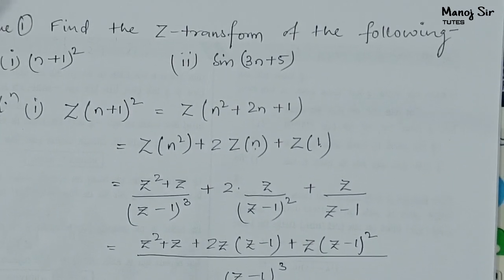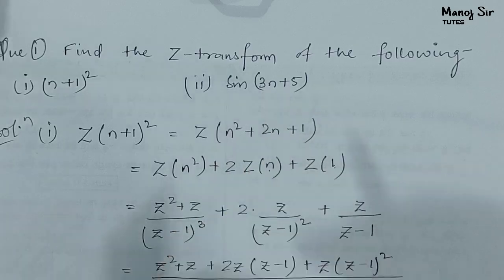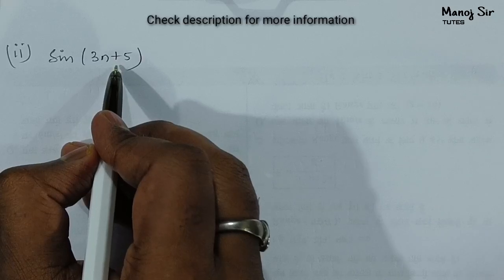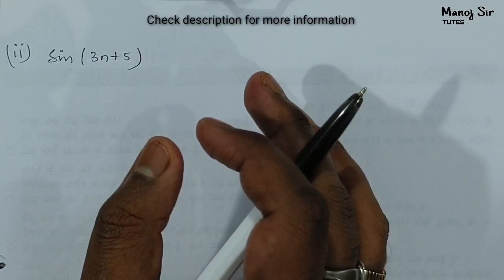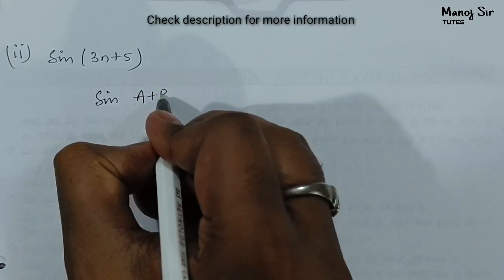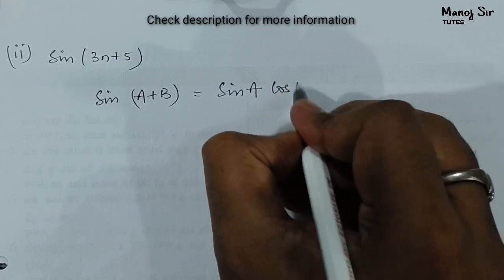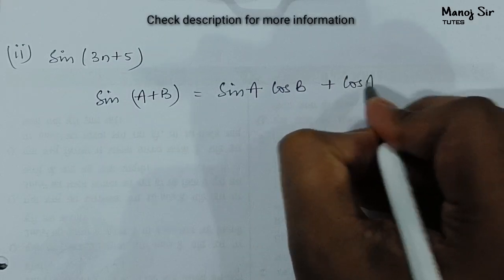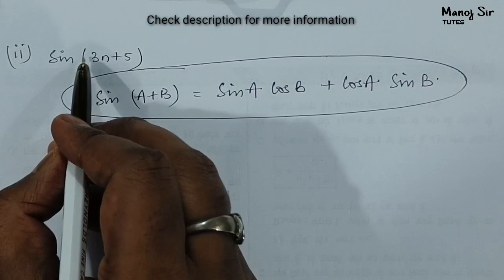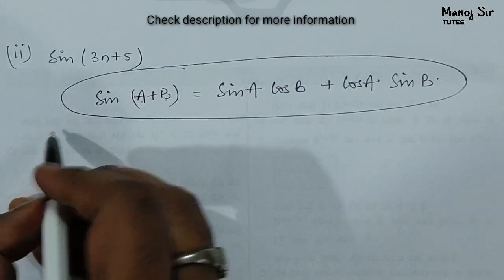Now coming to the second part: we need to find the Z-transform of sin(3n+5). First we need the formula for sin(a+b), which is sin(a)cos(b) plus cos(a)sin(b). Comparing, we get a equals 3n and b equals 5.